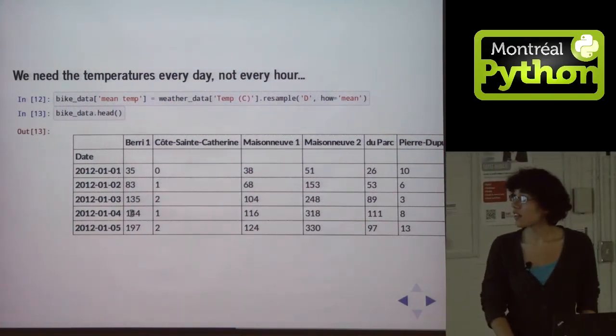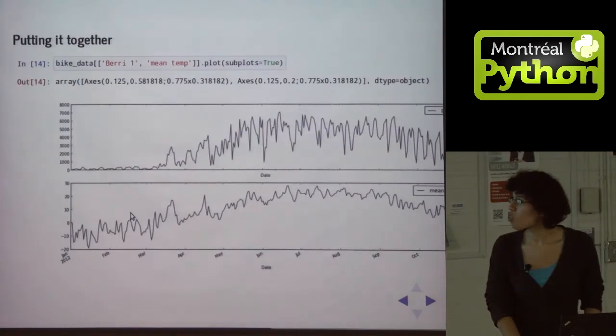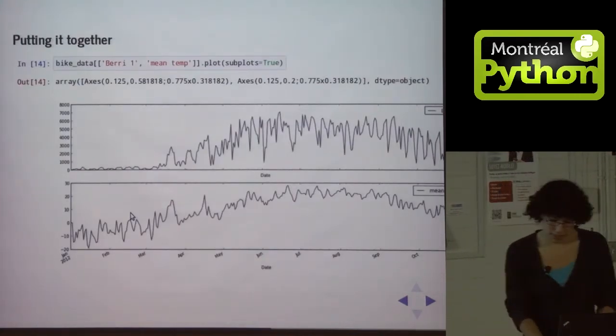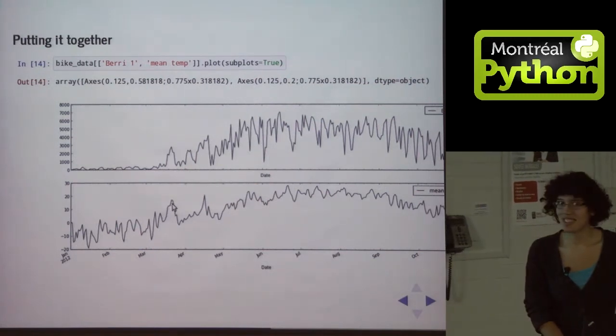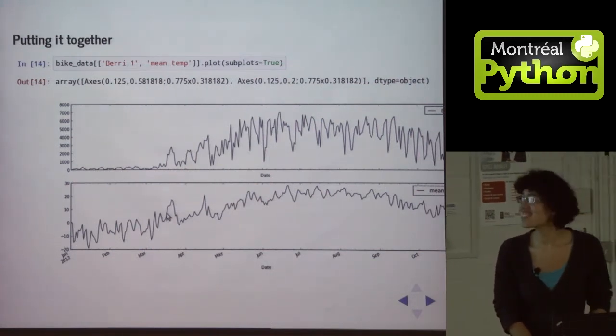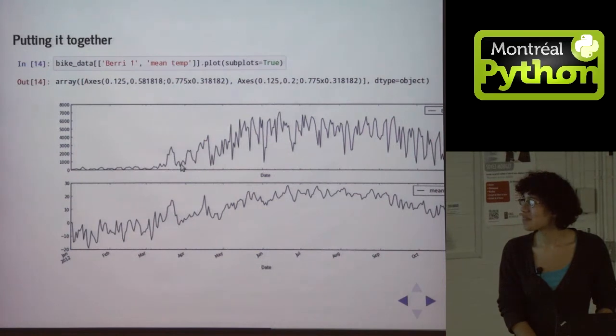And if we draw the graph of this, what we get is, you remember last year in March when it got really warm? Do people remember that when it was like 20 degrees? People also went biking then.